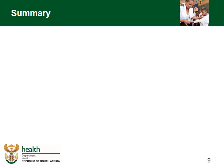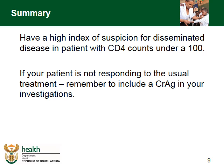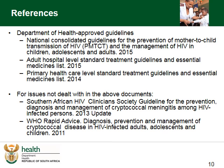In summary, signs and symptoms are not always helpful in identifying cryptococcal meningitis or disseminated cryptococcal disease. Have a high index of suspicion for disseminated disease in patients with a CD4 count under 100. If your patient is not responding to the usual treatment, remember to include a CRAG in your investigations. Our next module will focus on how you can confirm your clinical suspicions. Thank you.